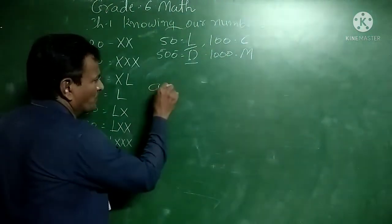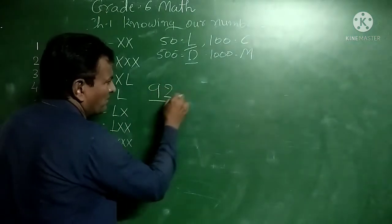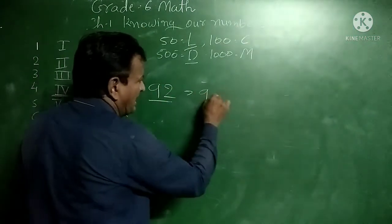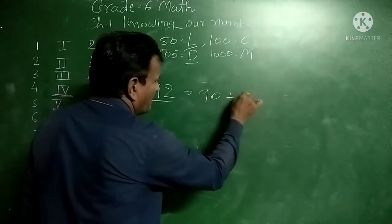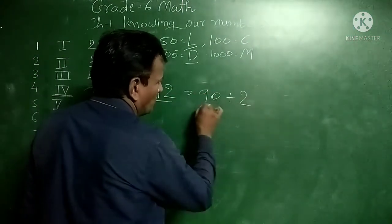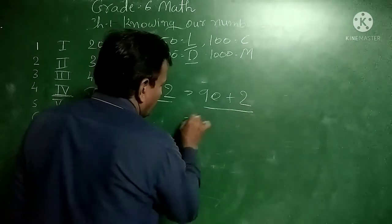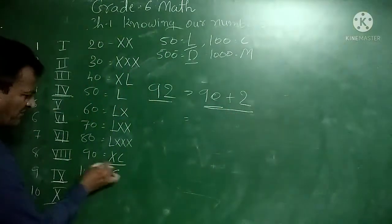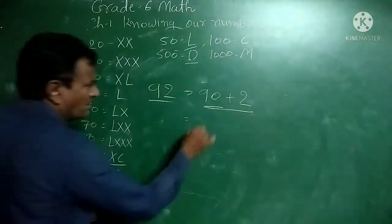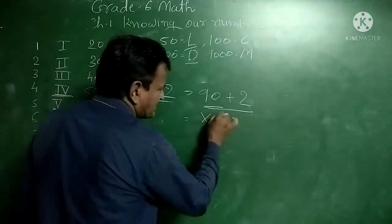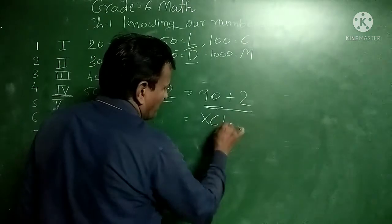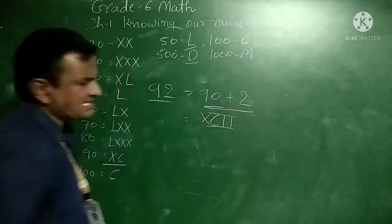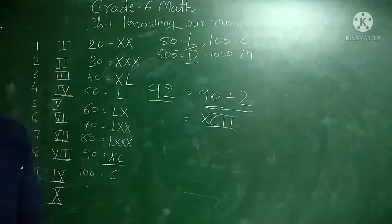One more example: 92. How do we write 92? We write it as 90 plus 2. The symbol for 90 is XC. For 2 we write II. So 92 in Roman numerals is XCII.